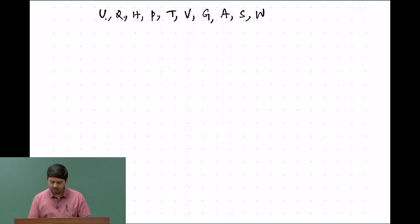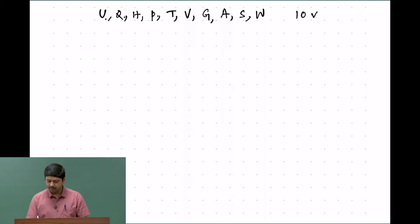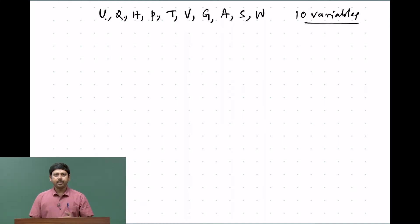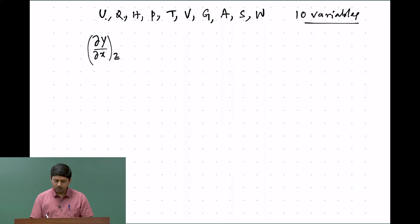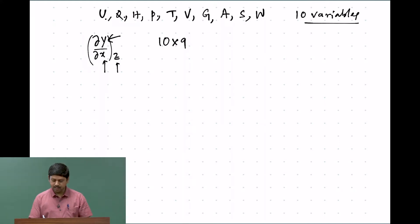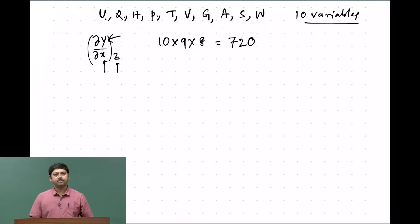Let us say there are 10 different variables or parameters. When you write a particular partial differentiation, for example dY/dX at a constant Z, you need 3 variables Y, X, and Z. So I can take Y as any of the first 10, X as any of the next 9, and Z as any of the next 8, giving me 720 possible partial derivatives.